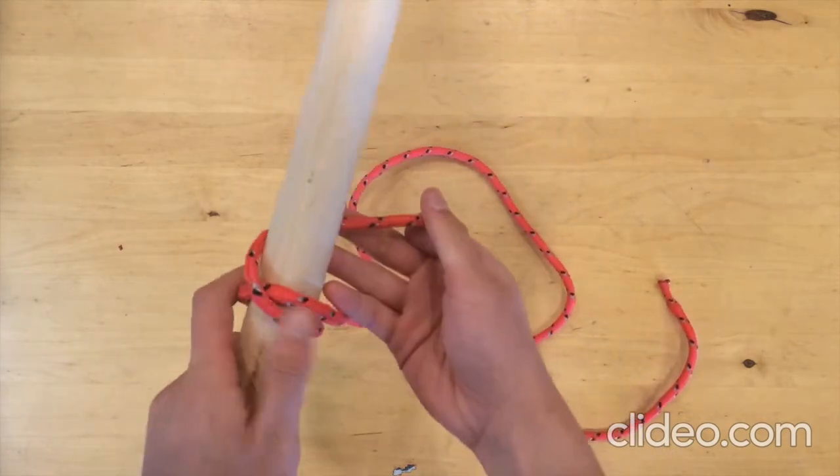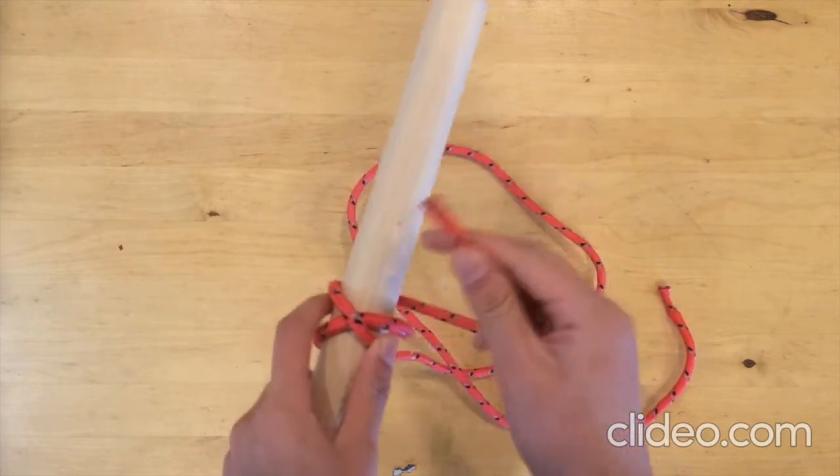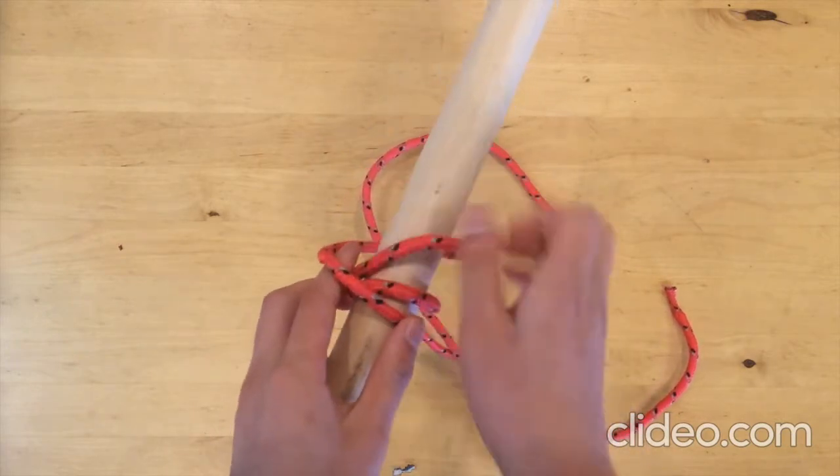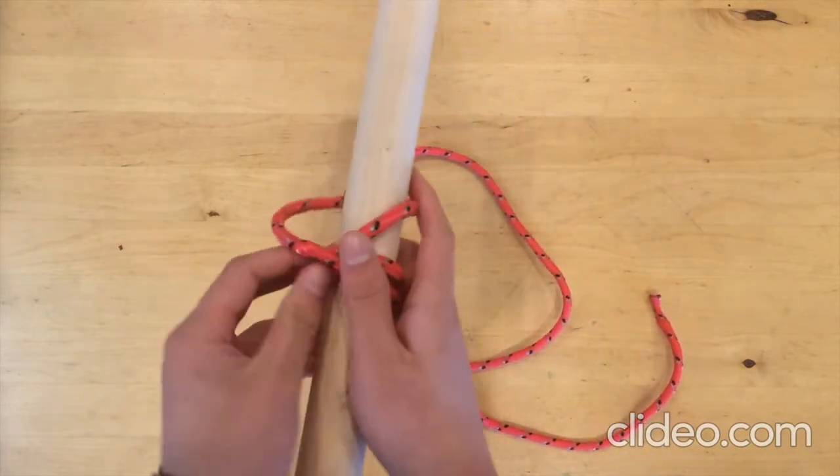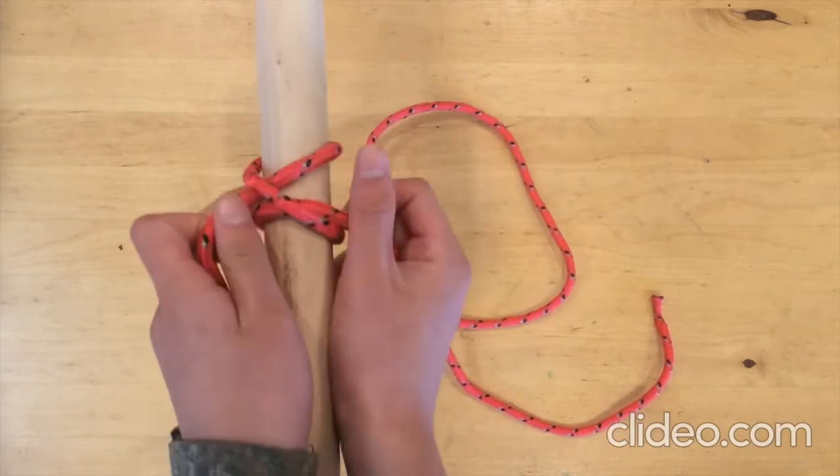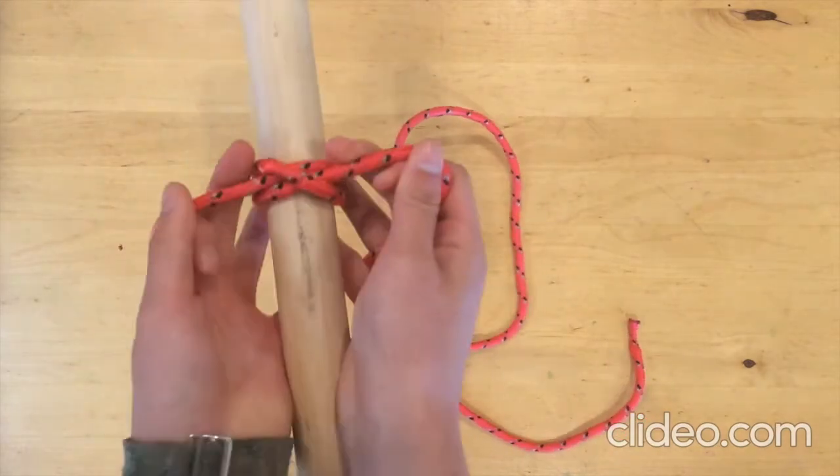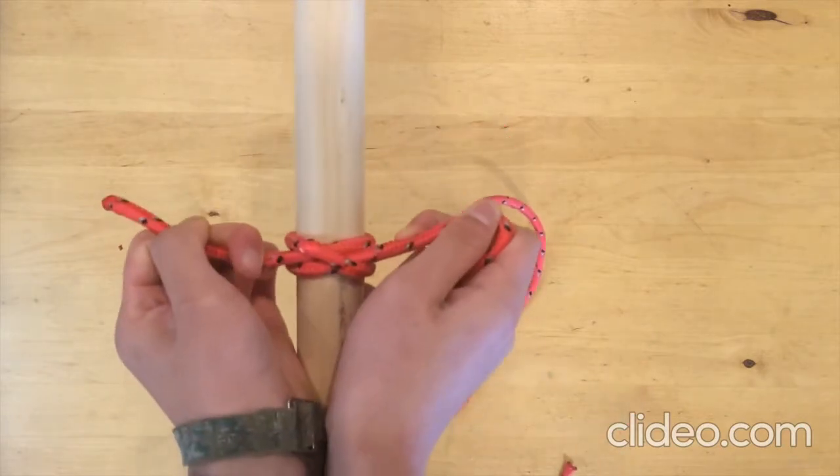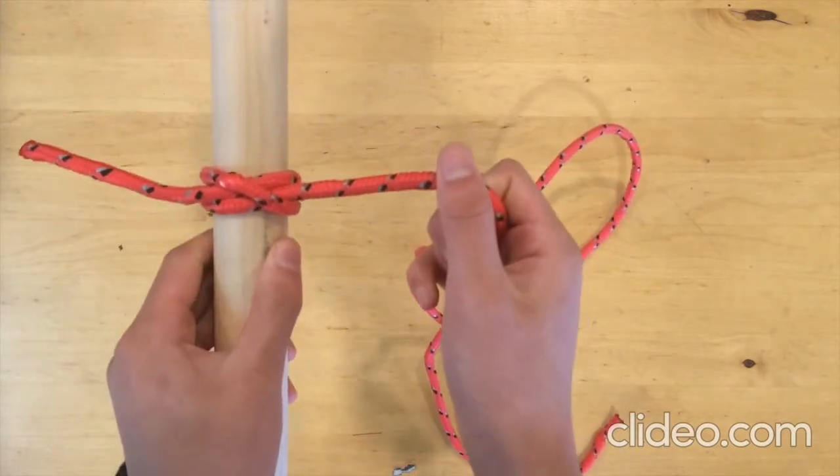All right, now you're going to come back around a third time, but go under the wrap that you just made here. So it should look like this. Okay, now you can just pull it tight, and you've got your clove hitch.